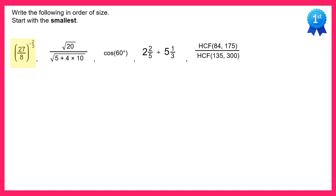We have a bracket to the power negative 2 thirds. What we can do here is take the reciprocal of the fraction, so instead of 27 over 8 we use 8 over 27, but then change the power from negative 2 thirds to positive 2 thirds.